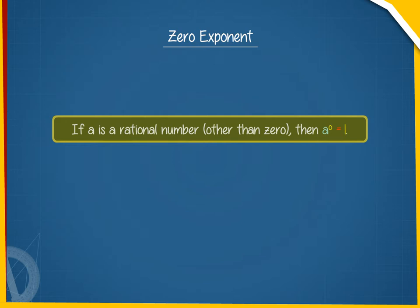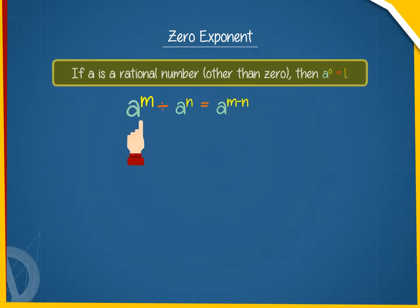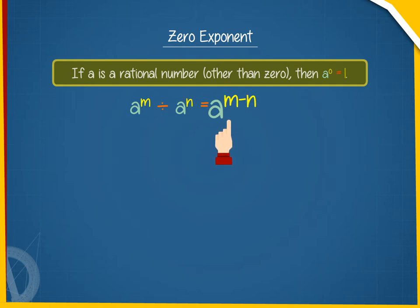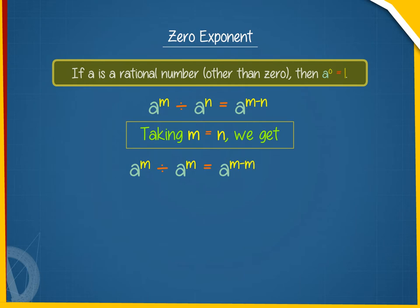This result can be obtained using Law 3: a raised to the power m divided by a raised to the power n equals a raised to the power m minus n. Taking m equals to n, we get a raised to the power m divided by a raised to the power m equals a raised to the power m minus m, equals a raised to the power zero. Therefore, one equals a raised to the power zero, or a raised to the power zero equals one.